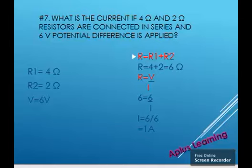So, first what we have to do is we have to find out the effective resistance. So, as it is a series connection, we will apply the formula R is equal to R1 plus R2. That is 4 plus 2. We have 6 ohms.